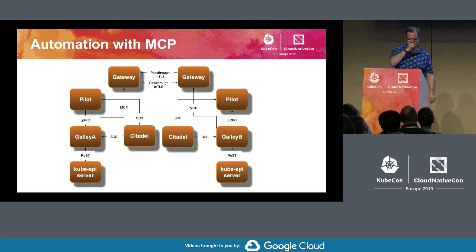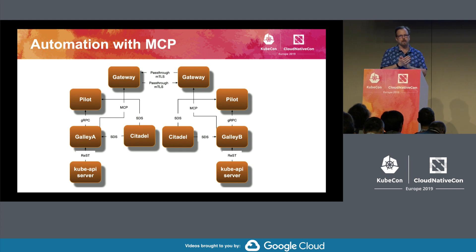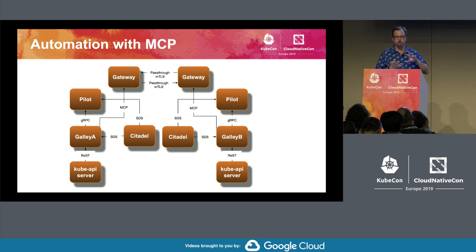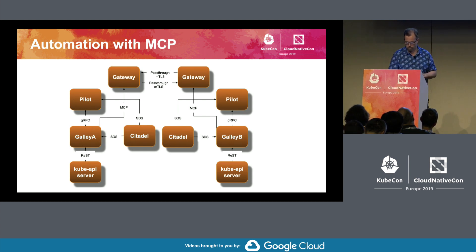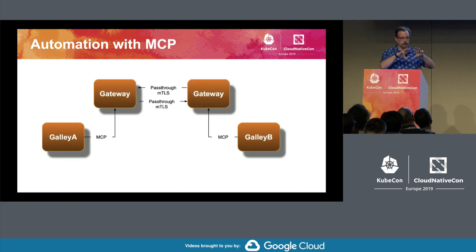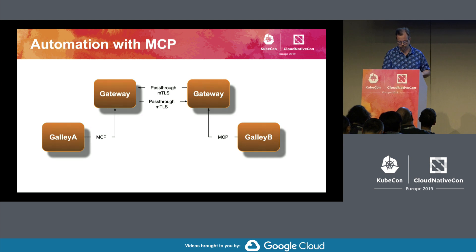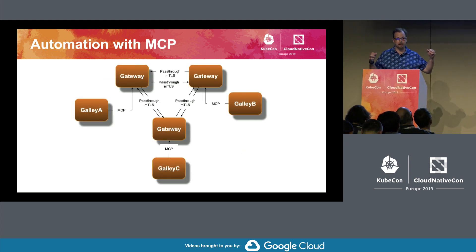SDS — secret discovery service — provides security through gRPC instead of through the typical method of loading secrets through the file system, which is slow. We're moving towards SDS. This is symmetry again — two nodes. Galley is communicating with the gateway over MCP, so we're going to use a service entry to create a connection between the two galleys. If we do that, we can create a connection between three galleys.